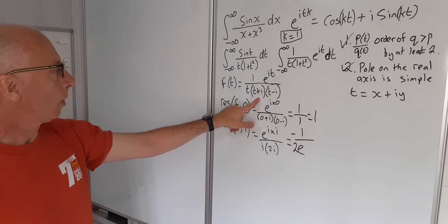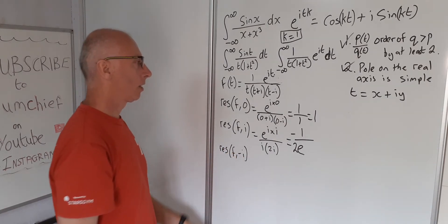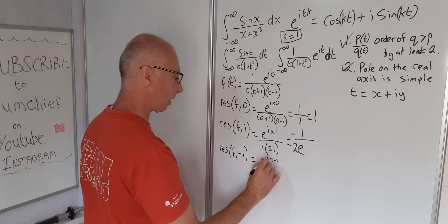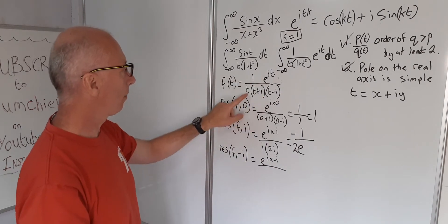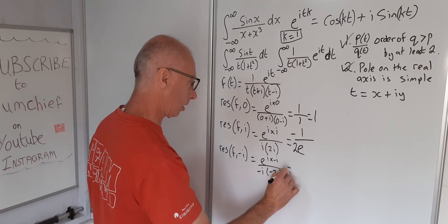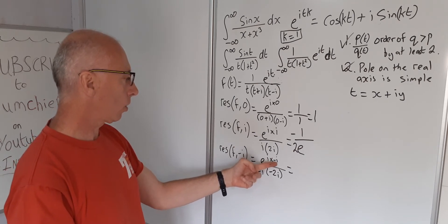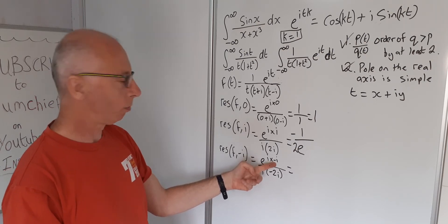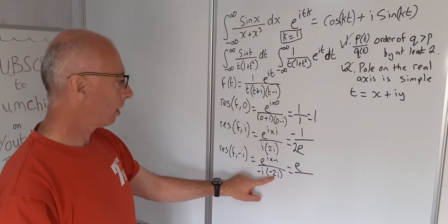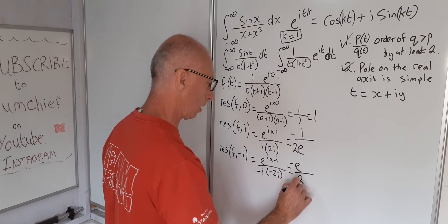The residue at t equals minus i: plug in minus i and cover the (t+i) factor. We get e^(i·(-i)) over (-i)·(-i-i) = e^(-i²) over (-i)·(-2i) = e^(1) over 2i² = e over (-2). So the residue at minus i equals minus e over two.